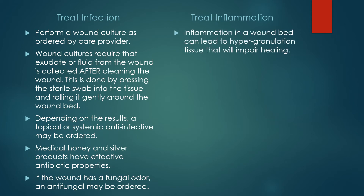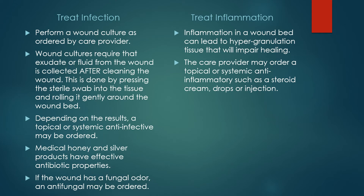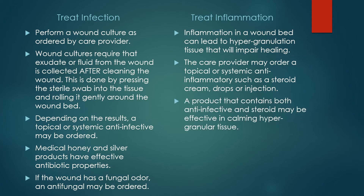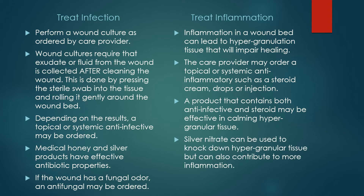To treat inflammation: inflammation in a wound bed can lead to hypergranulation tissue that will impair healing. The care provider may order a topical or systemic anti-inflammatory such as a steroid cream, drops, or injection. A product that contains both anti-infective and steroid may be effective in calming hypergranulation tissue. Silver nitrate can be used to knock down hypergranulation tissue in a wound bed or on the edges, but can also contribute to more inflammation.